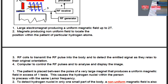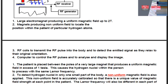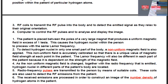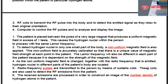The computer controls the RF pulses and analyzes and displays the image — that is component number four. The patient is placed between the poles of a very large magnet that produces a uniform magnetic field in excess of one tesla — a very large value compared to typical magnetic field values. This causes the hydrogen nuclei to precess at the Larmor frequency. To detect hydrogen nuclei in only one small part of the body, a non-uniform magnetic field is also applied, accurately calibrated so that there is a unique value of magnetic field strength at each point in the patient. The Larmor frequency will be different in each part of the patient because it is dependent on the strength of the magnetic field.